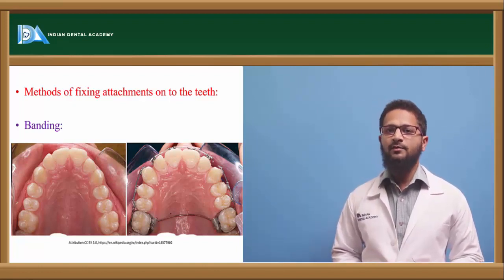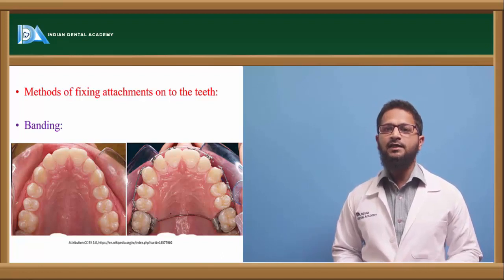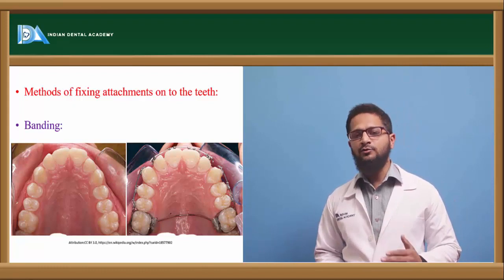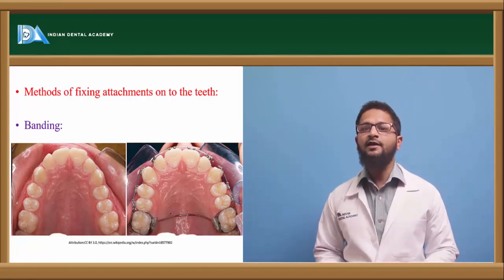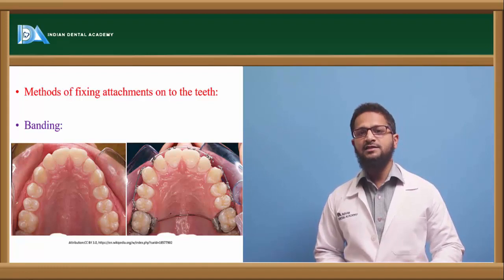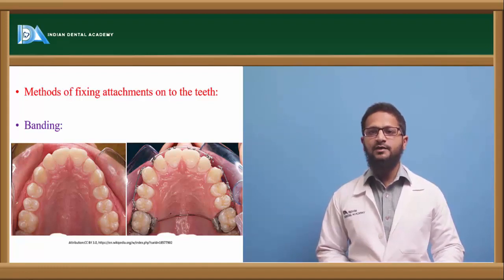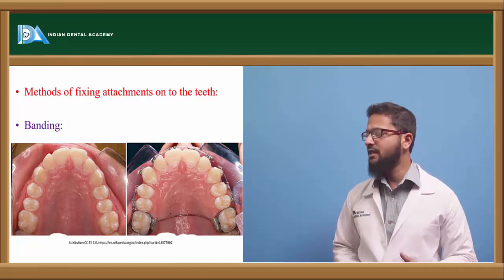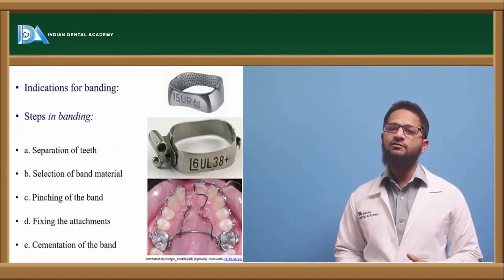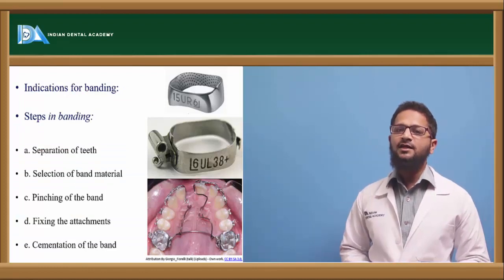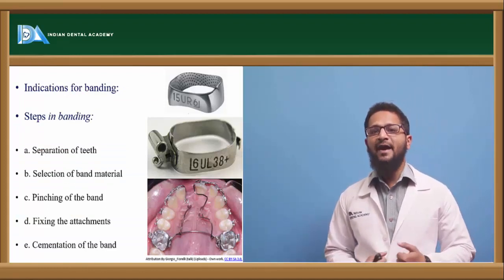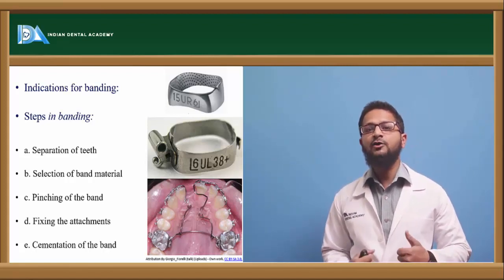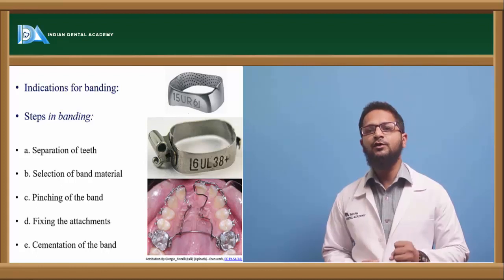Various types of band materials are available. Band materials can be either thicker and wider, or thinner and narrower. Molars and posterior teeth usually require thicker and wider band material, whereas anteriors — incisors, canines, and laterals — usually require thinner and narrower band materials. Banding is indicated in areas where occlusal forces are very high and where bonding cannot withstand the forces, particularly on posteriors where heavy occlusal forces are acting.